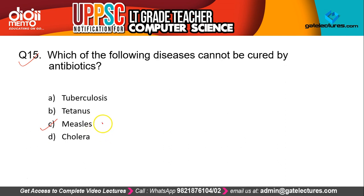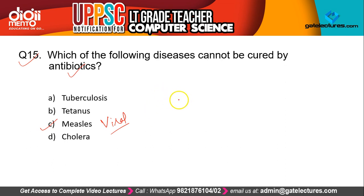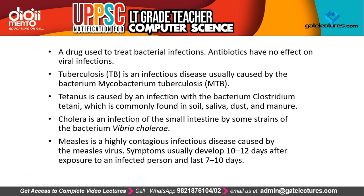Antibiotics are used when there is a bacterial infection. In viral infections, antibiotics have no effect. So next time if a doctor says you have viral fever but prescribes antibiotics, you can question it — because antibiotics cannot work against a viral infection.